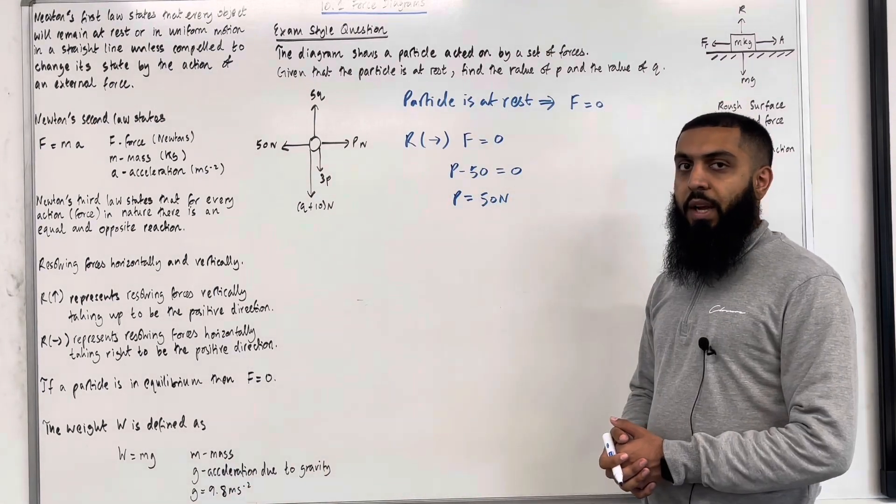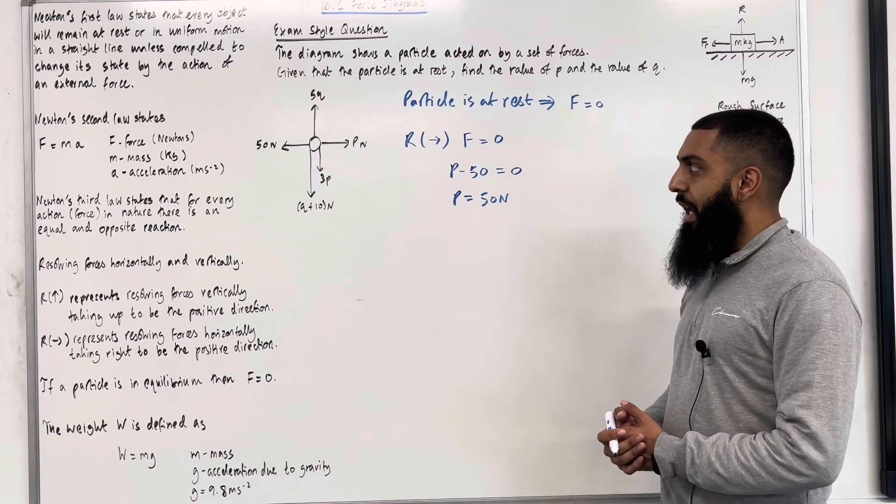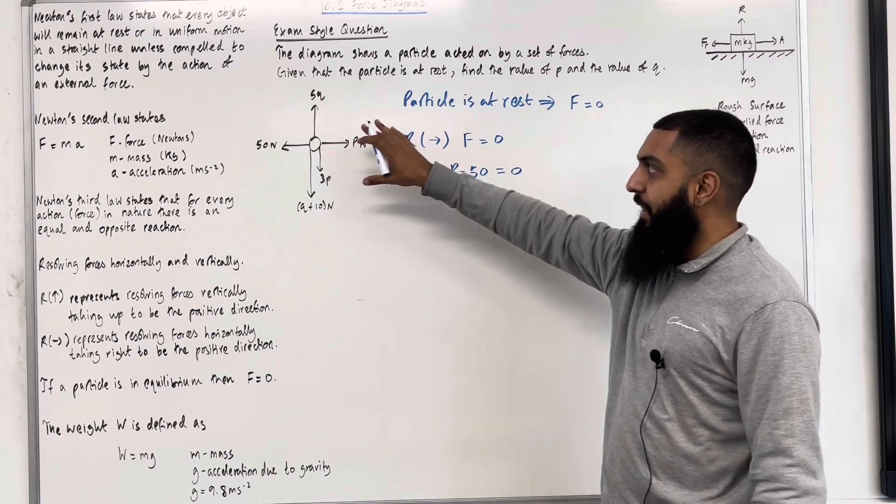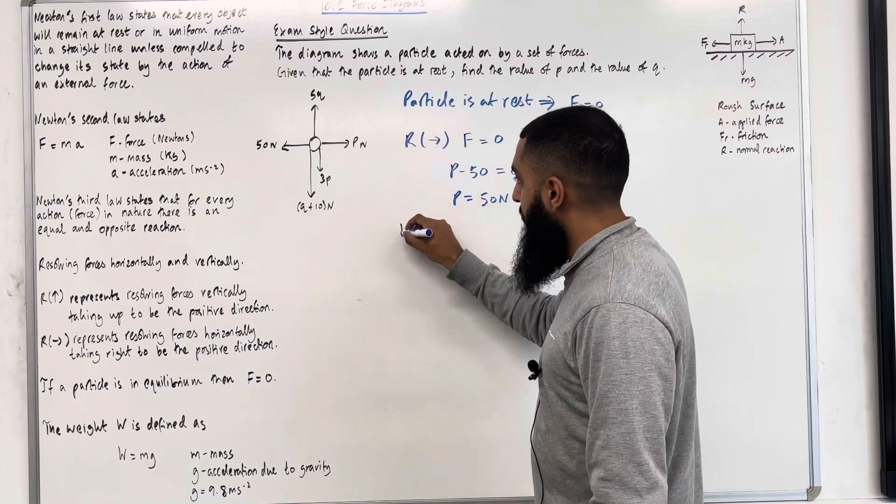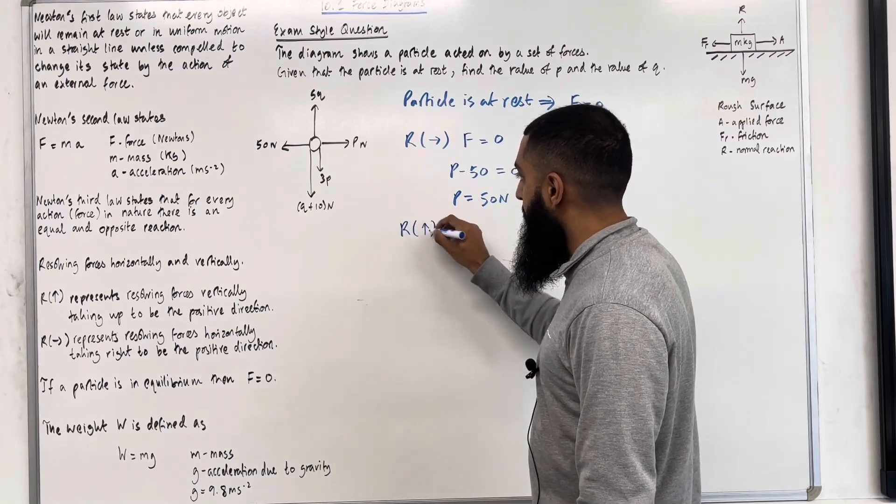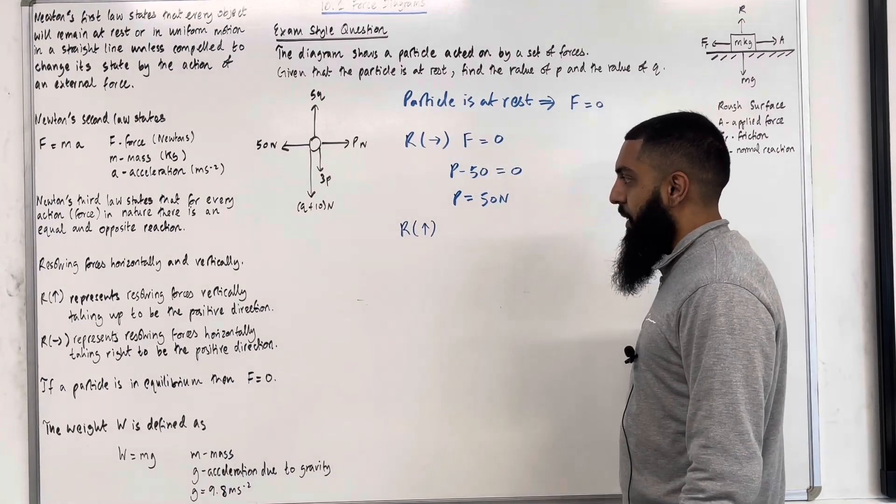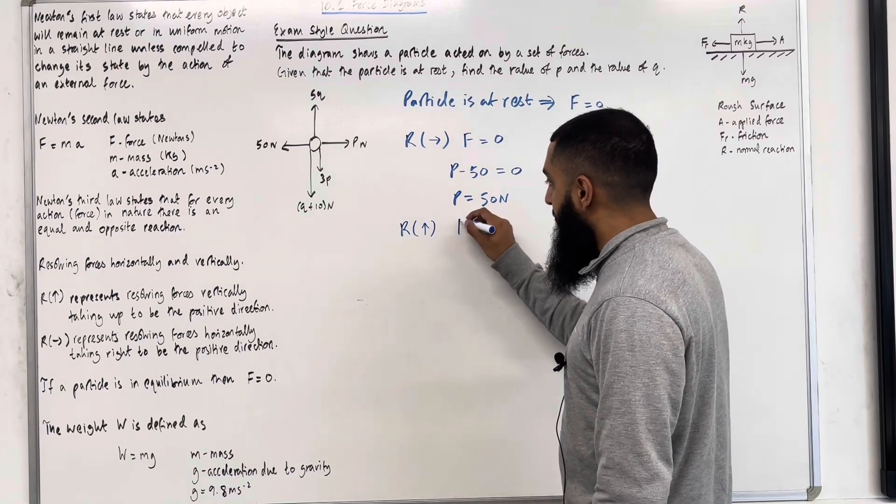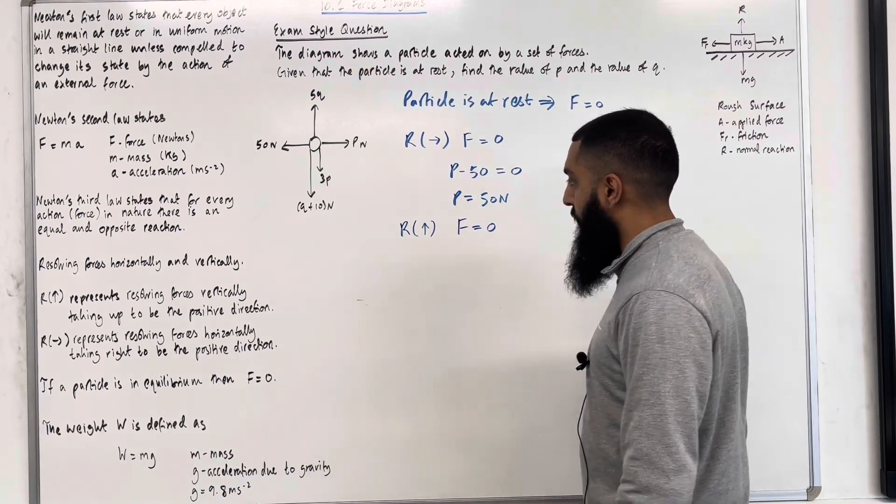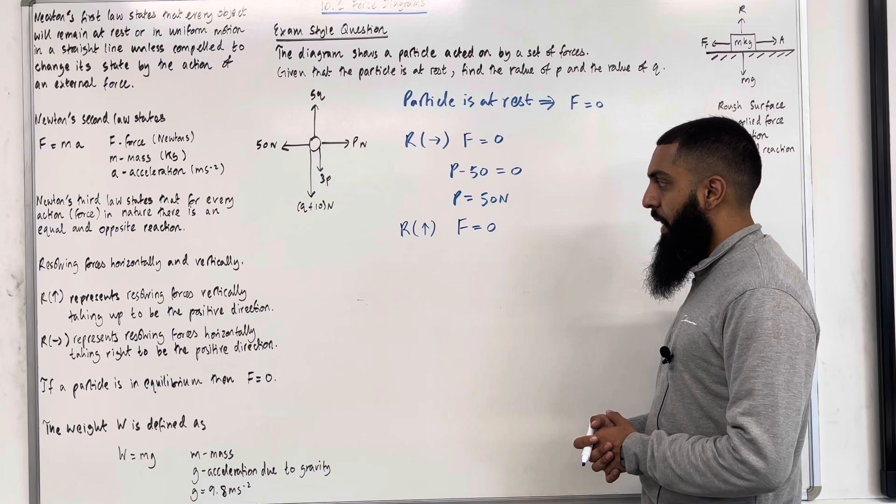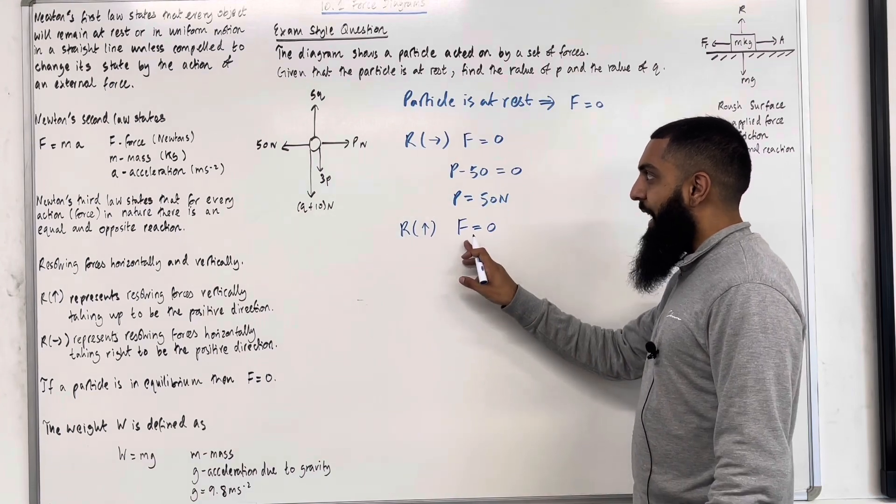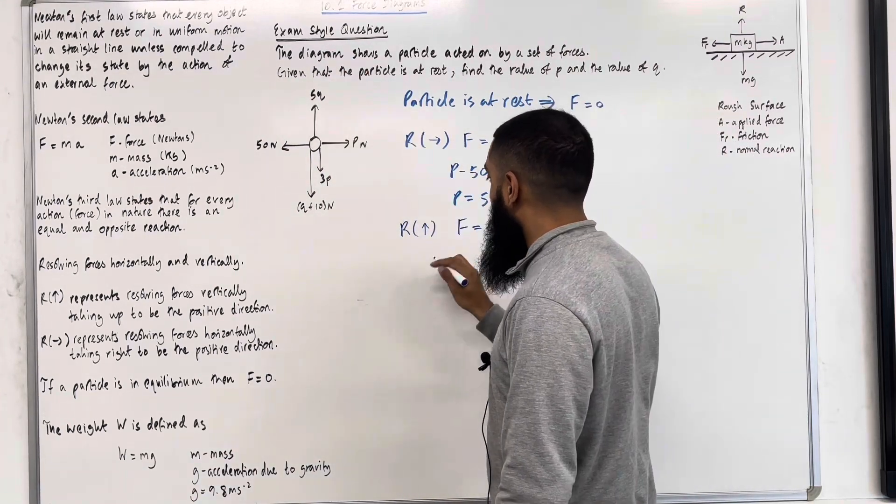Now I'm going to work out the value of Q. To find the value of Q, I need to resolve vertically because Q acts vertically. So resolve vertically taking up to be the positive direction. The resultant force F vertically is also equal to zero because the particle is at rest. So now what is the F? Well, F will be 5Q acting upwards.